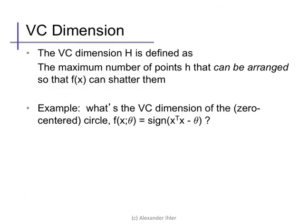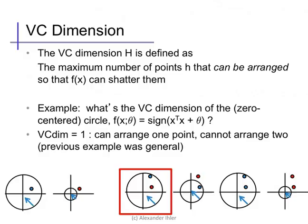Using the same model as before that predicts plus one outside of radius square root of theta, what is the VC dimension of this learner? Well, we can prove that it's one. So, we'll do this just exhaustively, just by looking at the two cases.